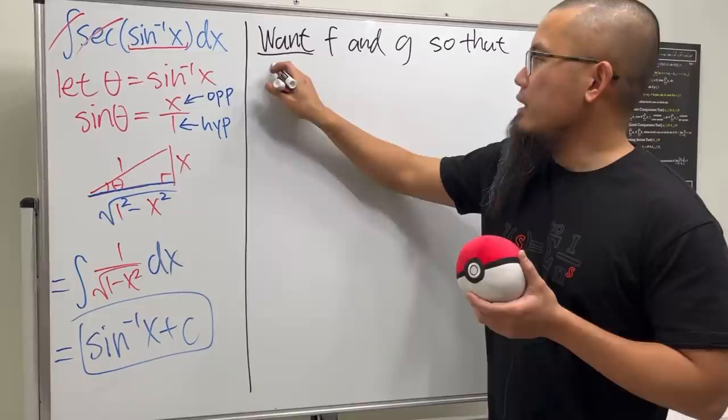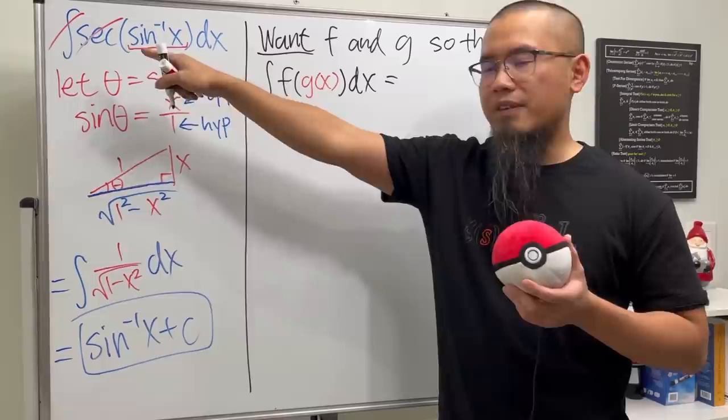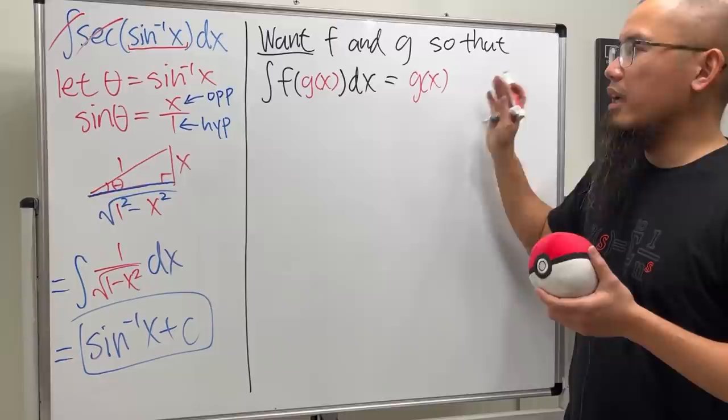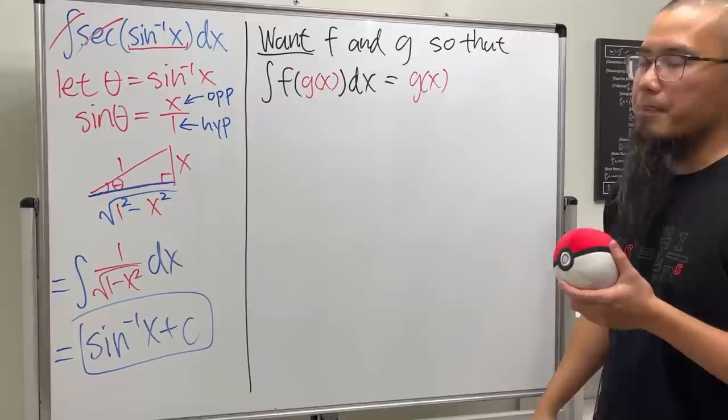When we integrate f and then the input is g right here, we really want to have that kind of effect right, meaning that we can just cancel, cancel, so we just want to get g of x back. And of course let's not put on the plus C because we can just do that at the very end later on. So what does this really mean?